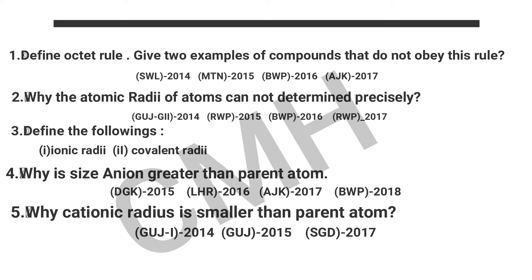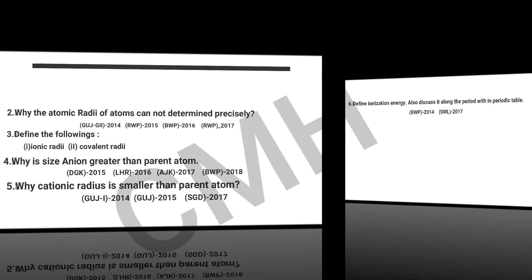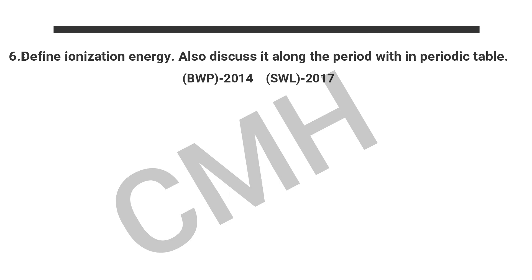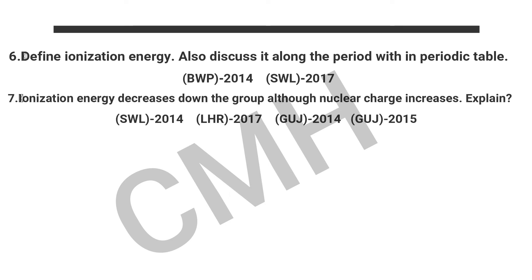Question number 4: Why is the size of an anion greater than the parent atom? Question number 5: Why is the cationic radius smaller than the parent atom? Question number 6: Define ionization energy and also discuss it along the period and within the group.